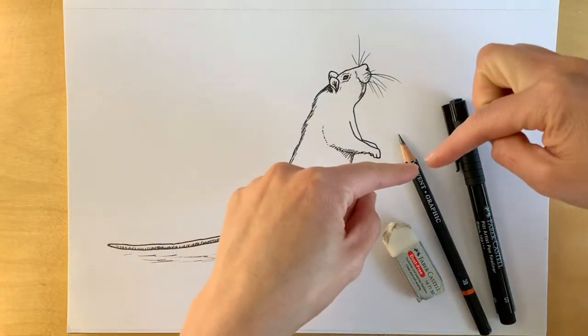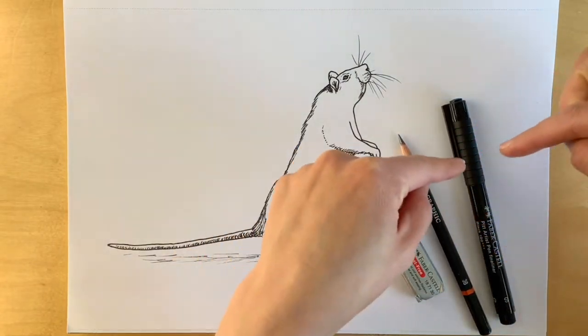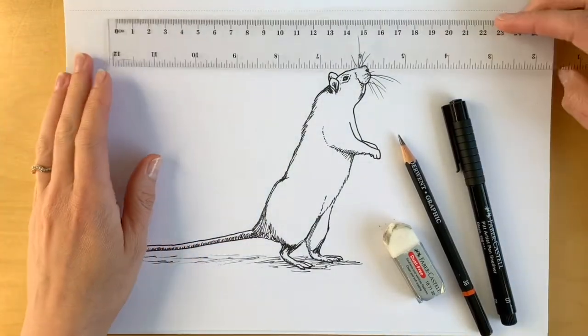To draw this cute little rat, you're going to need a pencil, an eraser, a black pen, some white paper and a ruler.